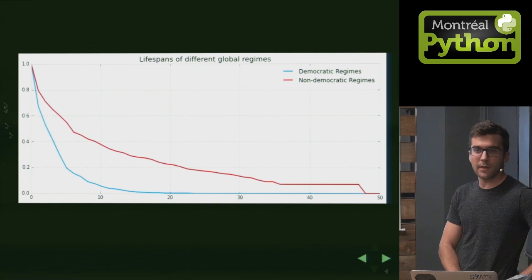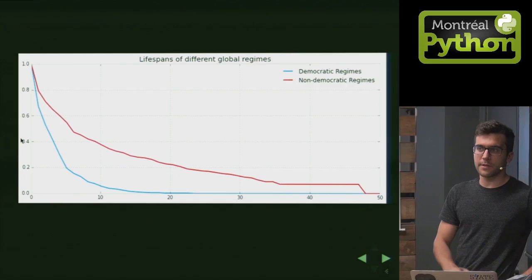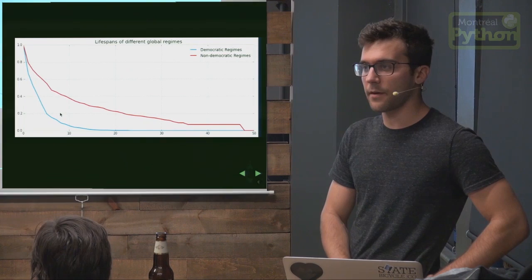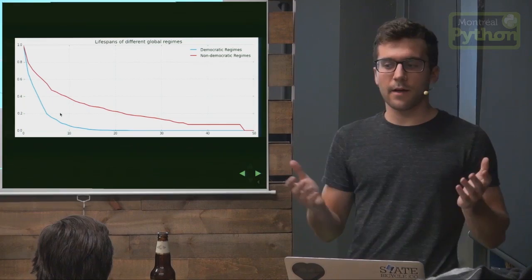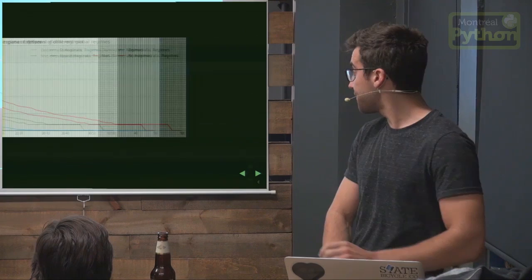We can see these two lines diverge very quickly, which makes sense — democratic regimes are high turnover, while non-democratic regimes have other influences keeping them in power. These are survival curves, generated by Lifelines using simple data. Let's do some math — it's not very complicated, and it's really cool.